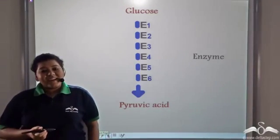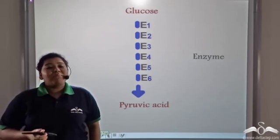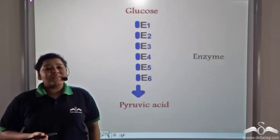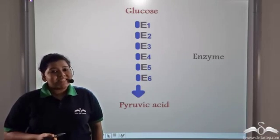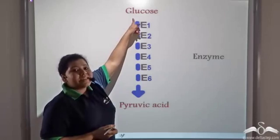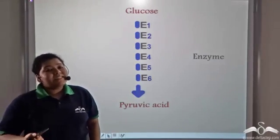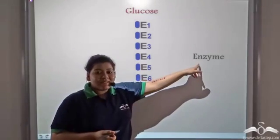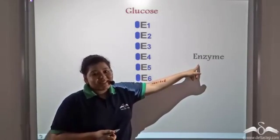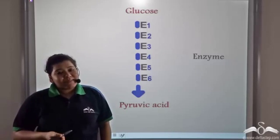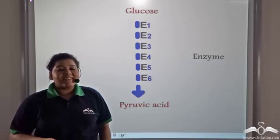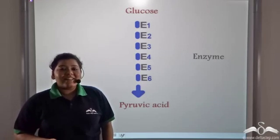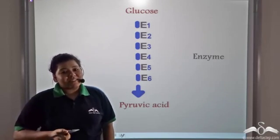So just like coal is broken down in a multi-step process manually as well as with the aid of machineries, similarly glucose is broken down in a multi-step process aided by enzymes which are biocatalysts. I am sure you studied in chemistry about catalysts which accelerates the reaction but itself does not get altered chemically.